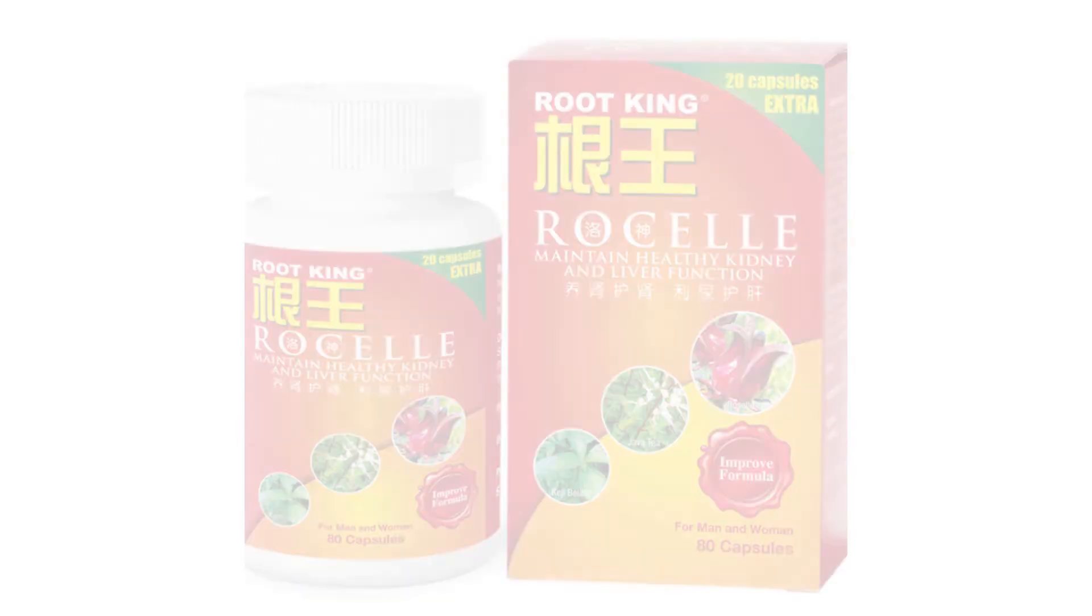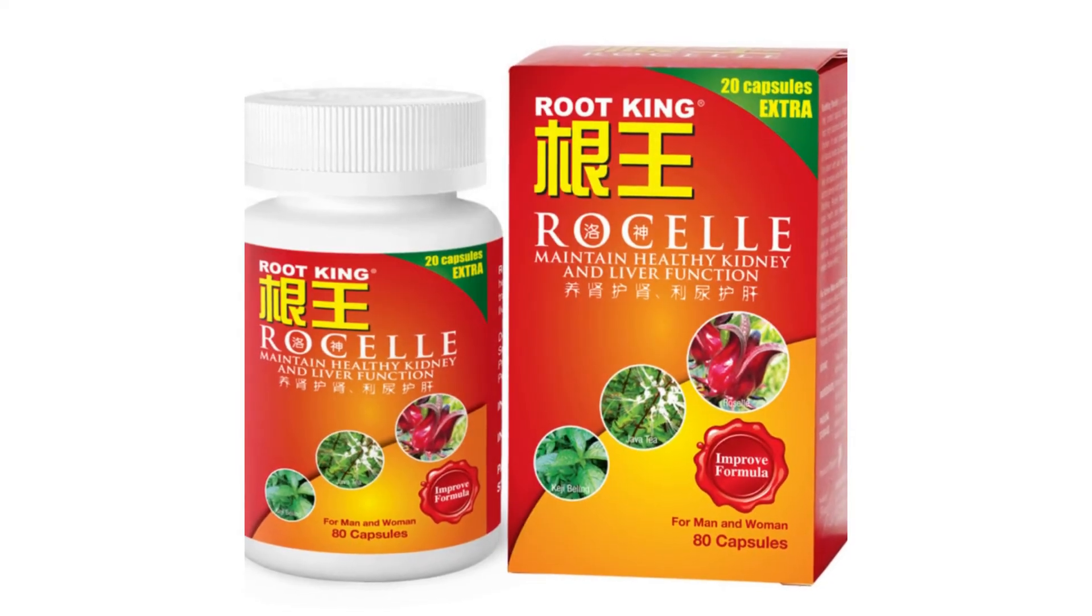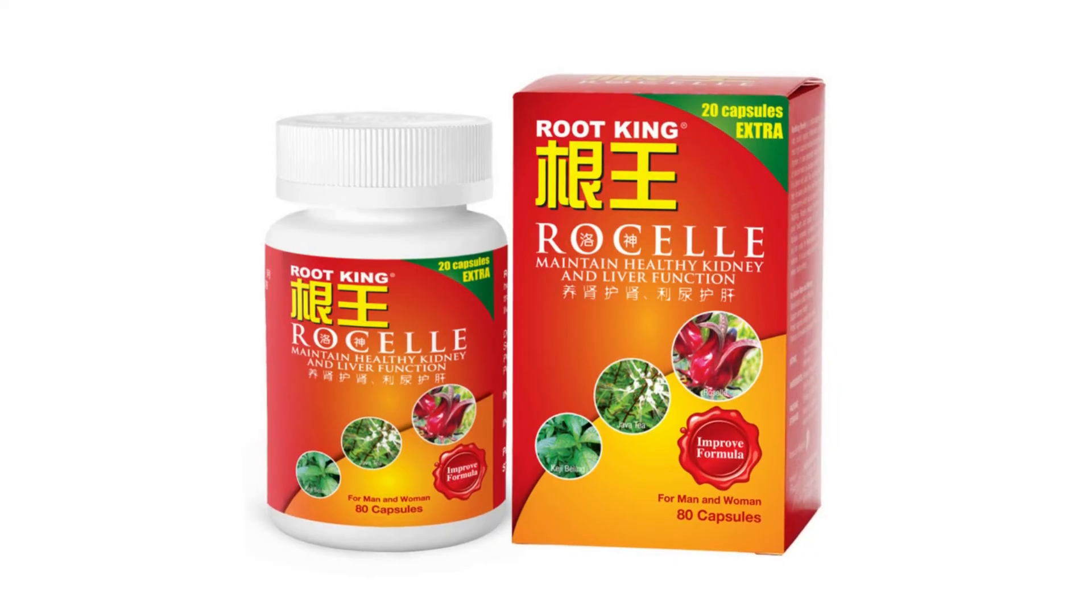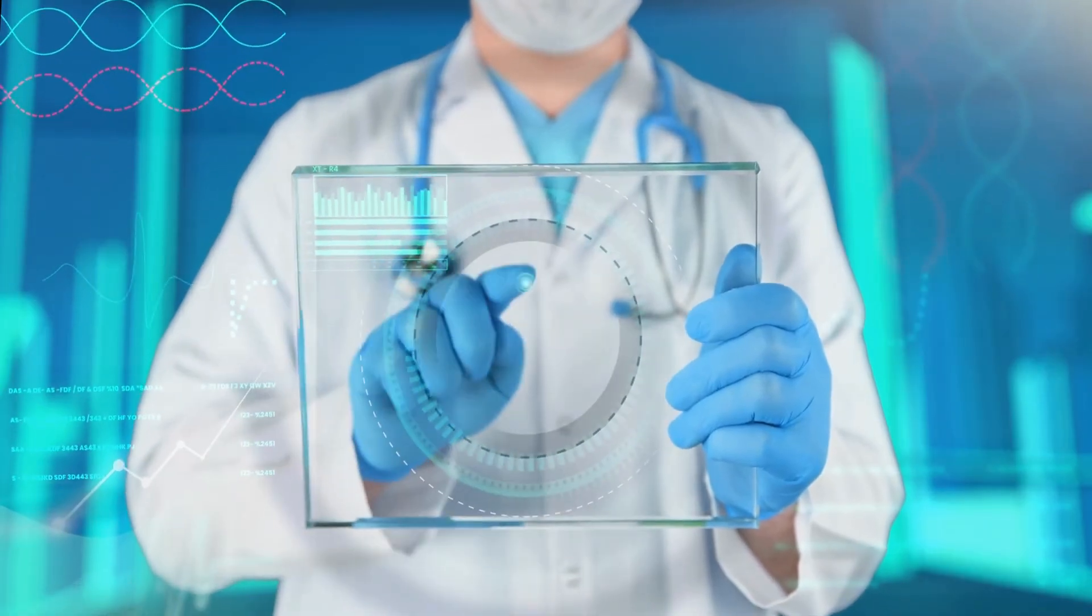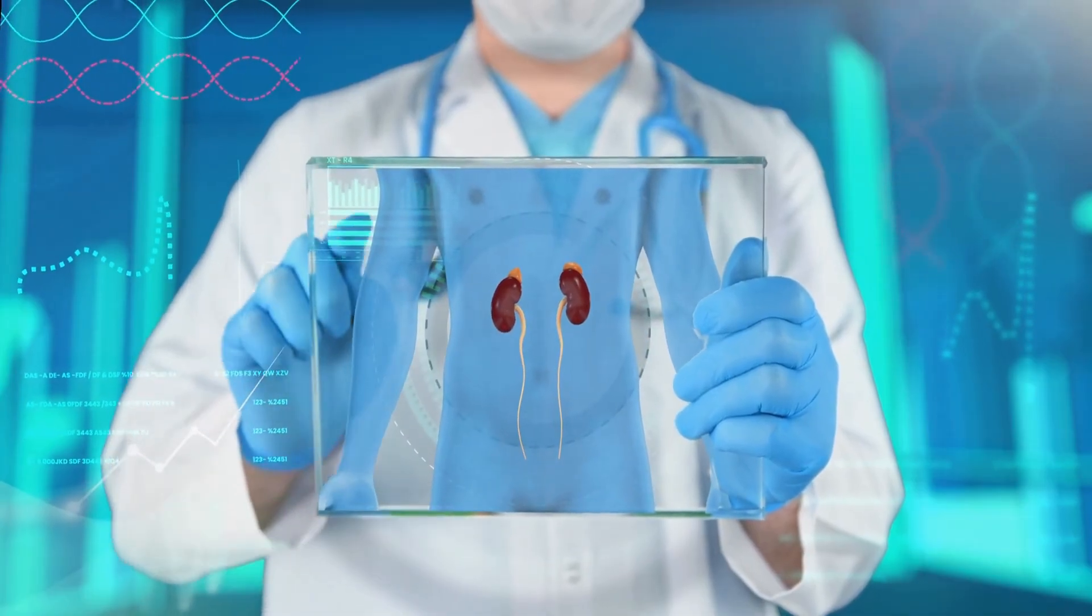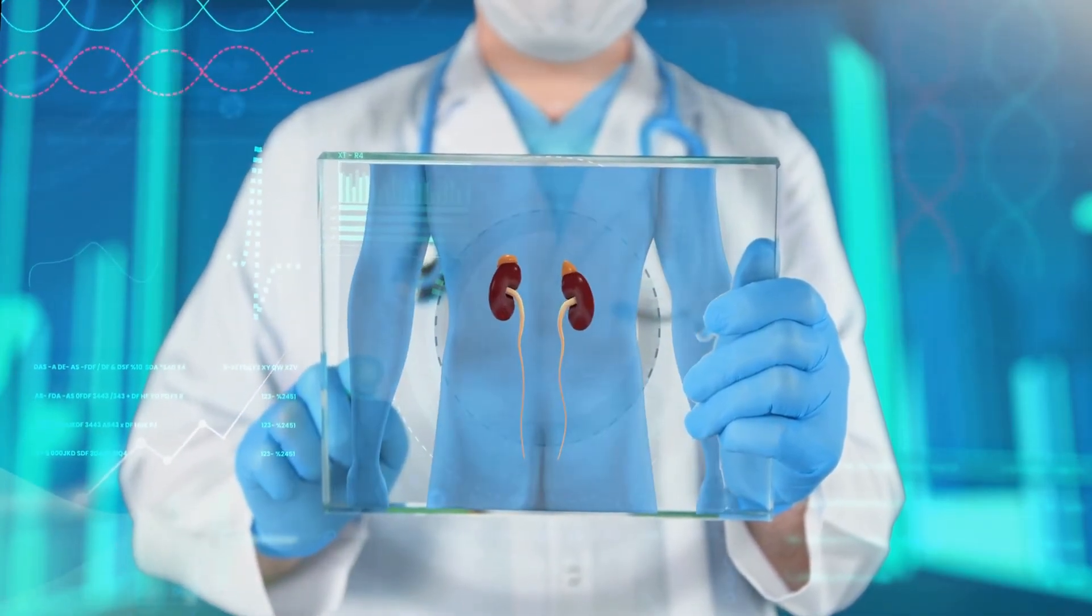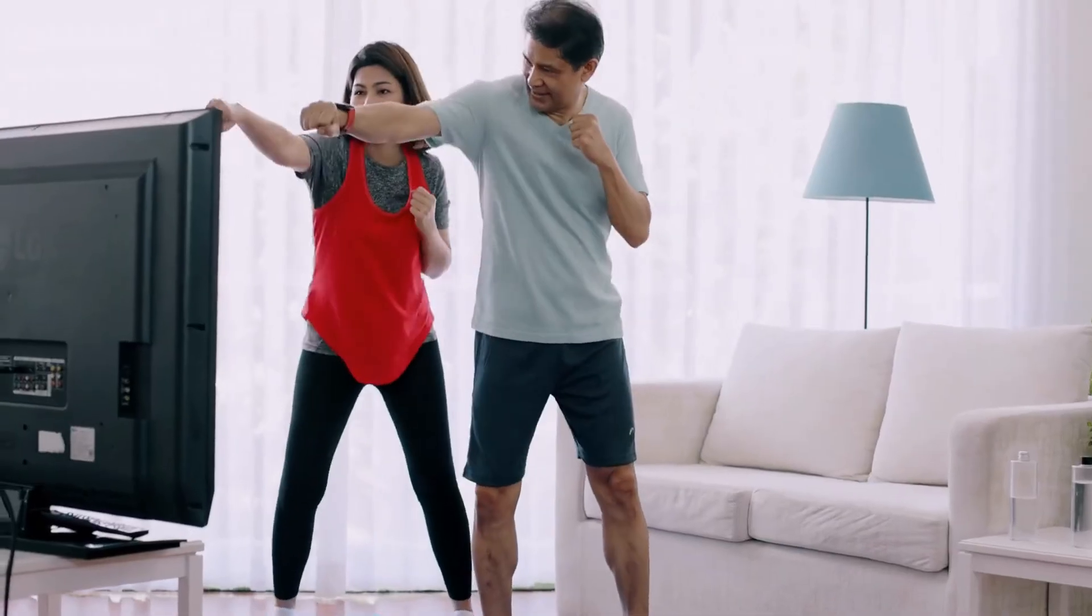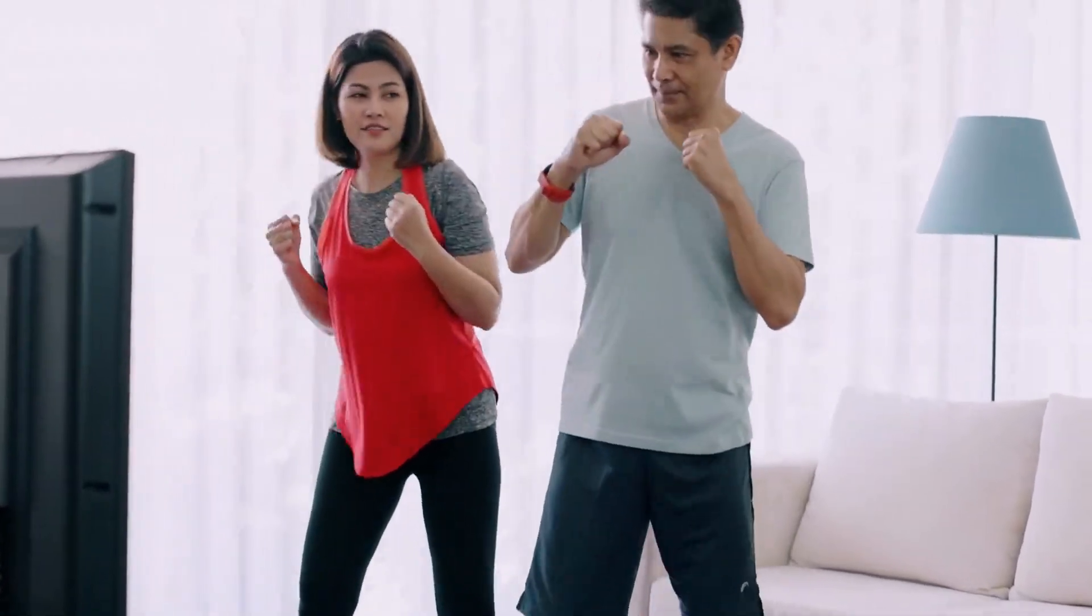Root King Rosell capsules are effective in improving various urinary tract problems, including prostate, kidney, and urinary tract infections, providing fast and effective results. They absorb and cleanse the kidneys, prostate, and urethra of impurities and toxins, maintaining kidney function. They are suitable for both men and women, providing comprehensive support for kidney health.